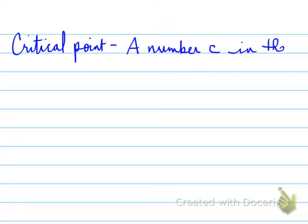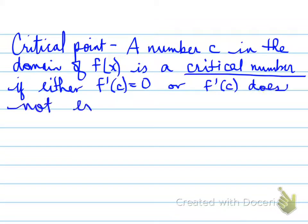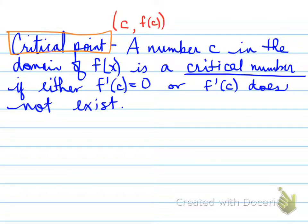Critical point: a number c in the domain of f(x) is known as a critical number if either f'(c) equals 0, or f'(c) does not exist. A critical point is an x value where the first derivative equals 0 or is undefined. That critical point will be the coordinate (c, f(c)), where c is the x value and f(c) is the y value.